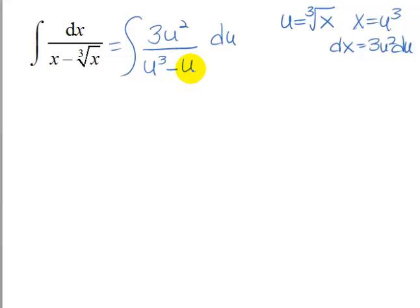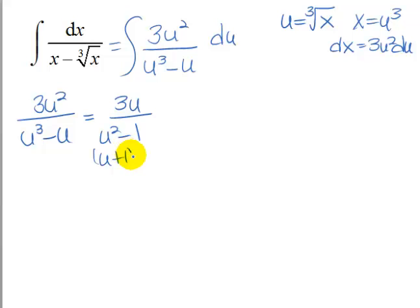So we now have a function that doesn't have radicals in it. So let's go ahead and we're going to do partial fractions. If we have 3u squared over u to the third minus u, actually this fraction is not reduced because there's a u in common everywhere. So let's go ahead and reduce. So this is going to be u squared minus 1, and that will actually factor difference of squares.